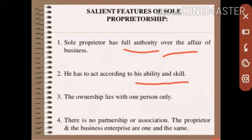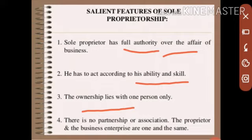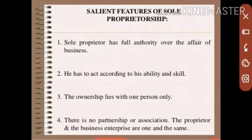Ownership is vested with one person only. There is no partnership and no association. The proprietor and business enterprise are one and the same — there is no distinction between ownership and the business entity. The business section and the business enterprise are the same. The proprietor and the business enterprise are the same.